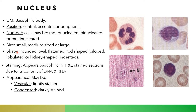The shape may be rounded, oval, flattened, throat-shaped, bilobed, globulated, or kidney-shaped. As for staining, the nucleus appears basophilic, but according to its appearance it may be light stained or dark stained.